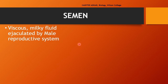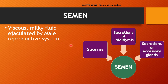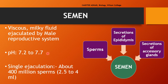The semen is the ejaculatory fluid of the male reproductive system. It is a viscous milky fluid consisting of sperms or the male gametes, the secretions produced by the epididymis, and the secretions produced by the accessory glands — the seminal vesicles, prostate gland and the Cowper's glands. The semen is alkaline in nature with a pH of 7.2 to 7.7. A single ejaculation contains about 400 million sperms, and the quantity of semen released at a time is about 2.5 ml to 4 ml.